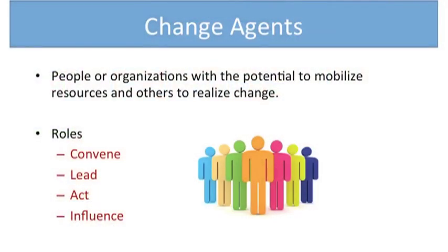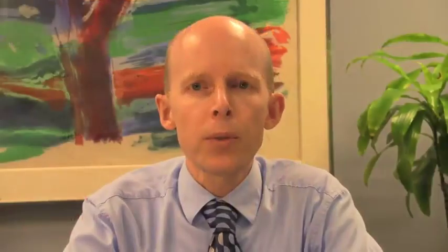As we start to think about these different potential barriers for change, we can then start to see where people play a role as change agents. As change agents, people can do several things to help make change happen within institutions. They can have convening power, bringing groups together. They can take on leadership roles. They can take action, sometimes as individuals or within groups. And of course, they can have influence over others.